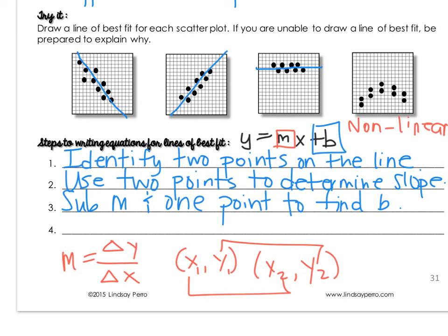And then last, you're going to substitute the slope and the intercept into your equation in y equals mx plus b form. Then, you have your equation for your line of best fit.